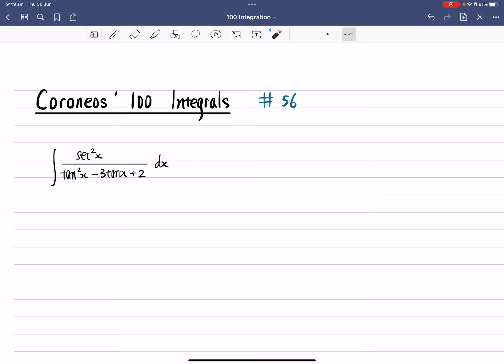Okay, Coronies' 100 Integrals, number 56. Alright, so this time we need to integrate sec²x over tan²x - 3tanx + 2.